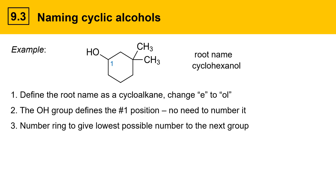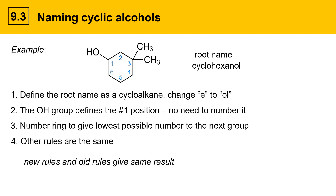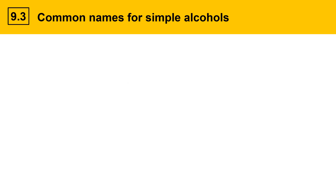The next thing to do is number the ring to give the lowest possible number to the next substituent. Here we number around the ring clockwise so that the two methyl groups get the number three. The other rules for naming cyclic alcohols are the same as for alkanes — put substituent names in front of the root name. Since the OH group is defined as position one, the new and old rules give the same result: 3,3-dimethylcyclohexanol.